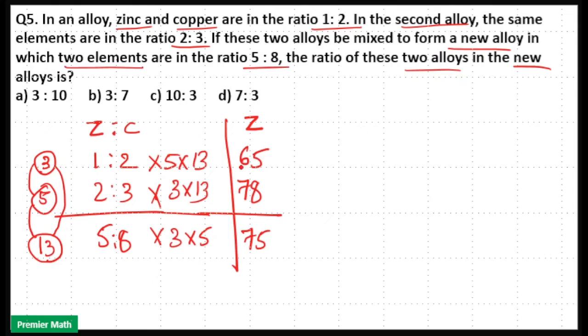After equalizing the total parts, zinc in the first ratio is 65 parts, second ratio is 78 parts, and in the third alloy is 75 parts. After mixing first and second alloy, zinc part will become 75.